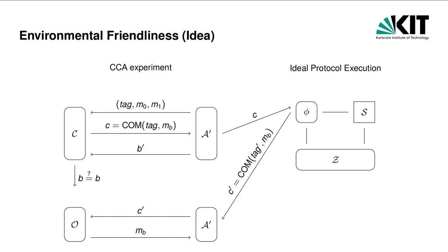Now consider the ideal execution. Again, the adversary forwards the challenge commitment C to the protocol execution. Suppose that the simulator runs in superpolynomial time and is able to extract the commitment provided by the adversary. In order to set up some simulation trapdoor, it creates a commitment with the same value as C, but using a different tag, tag prime. As this commitment is also never opened and hiding against polynomial time adversaries, a polynomial-time environment will not be able to see any difference. However, adversary A' can take this commitment C' and send it to the CCA oracle. As the tag is different from the challenge tag, this is allowed. The adversary will learn that commitment C' is to M_B, allowing it to win the CCA game with probability 1.